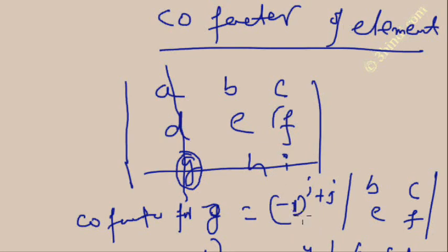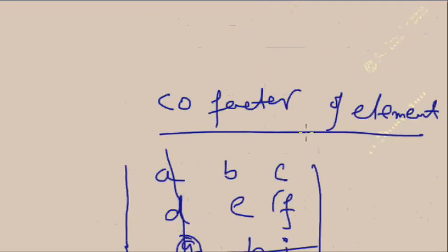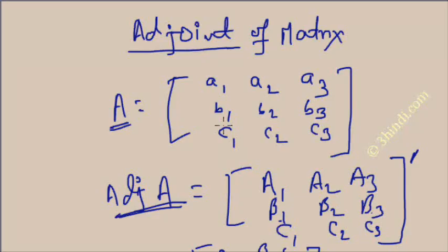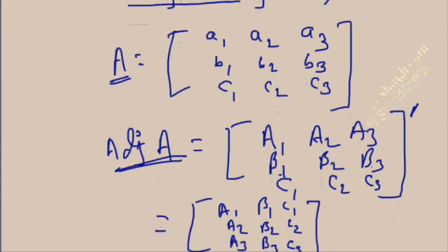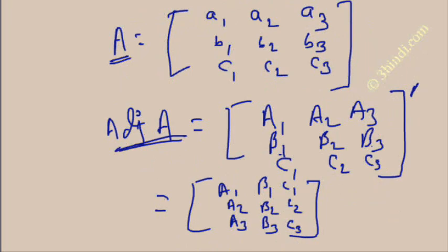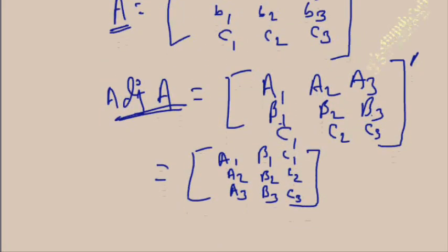There are only two things to remember. First, the sign is minus one to the power i plus j, where i is the row number and j is the column number. Second, delete the row and column in which the element is present, and find the determinant of the remaining elements. In this way you get the cofactor for any element. The adjoint of any square matrix is obtained by replacing elements with their cofactors and then transposing.